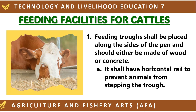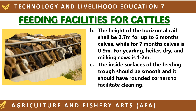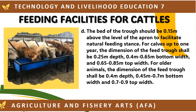Feeding facilities for cattle. First are the feeding troughs, which shall be placed along the sides of the pen and should be made of wood or concrete. They shall have a horizontal rail to prevent animals from stepping into the trough. The height of the horizontal rail shall be 0.7 m for calves up to 6 months, 0.9 m for 7-month calves, and 1 to 2 meters for yearlings, heifers, dry cows, and milking cows. Inside surfaces should be smooth with rounded corners to facilitate cleaning.